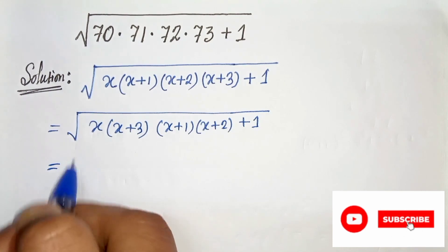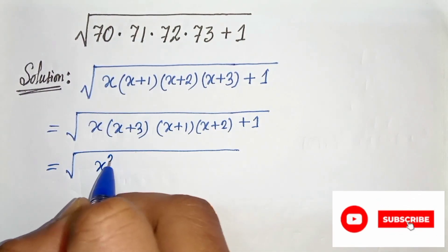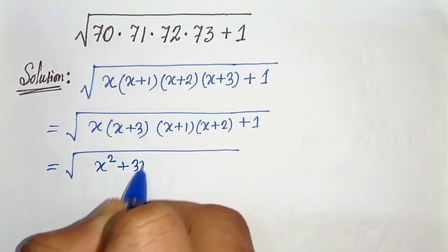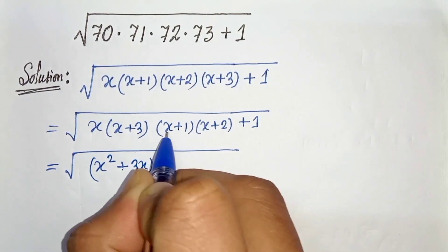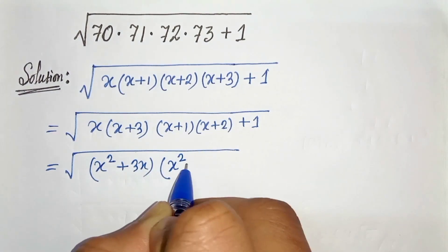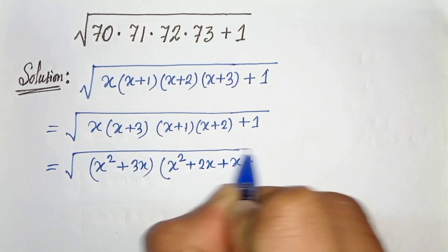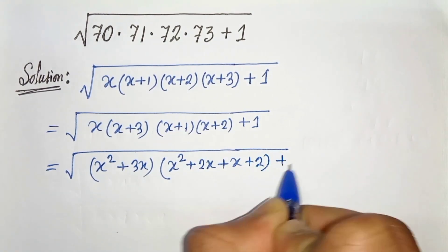In the next step, let's do the multiplication. So we'll get x squared plus 3x times x times x is x squared. x times 2 is 2x plus x plus 2 times 1 is 2 plus 1.